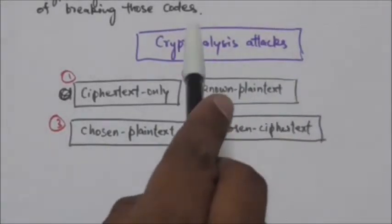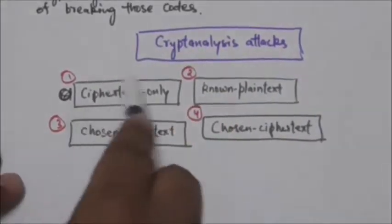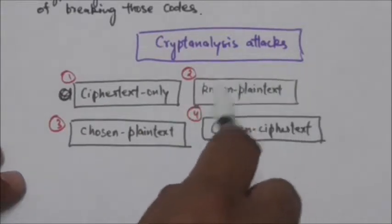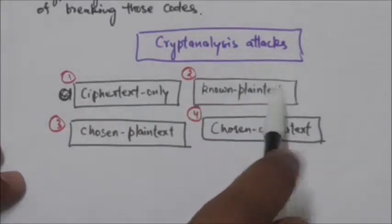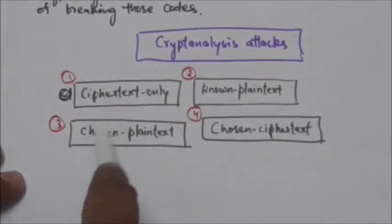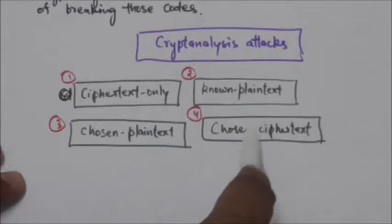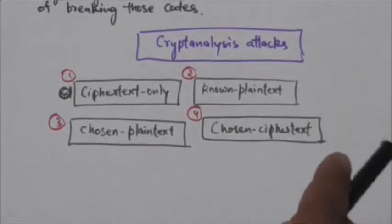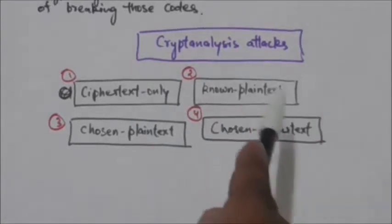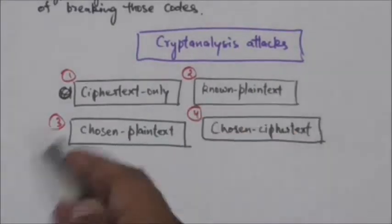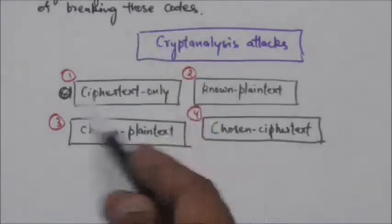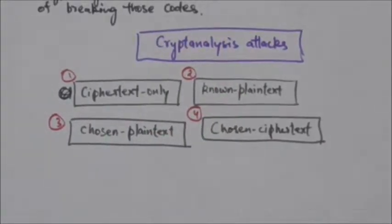There are four types of cryptanalysis attacks which we are going to study in this tutorial: one is ciphertext only, another one is known plaintext, third one is chosen plaintext, and fourth one is chosen ciphertext.